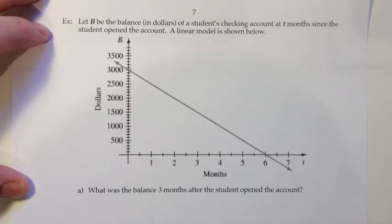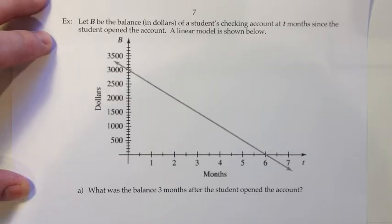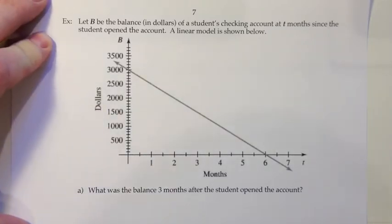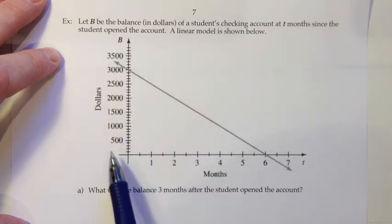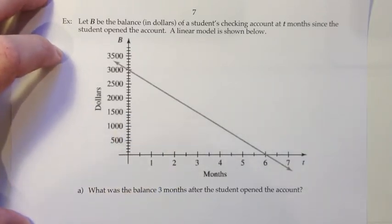Okay, we will now move on to a real-life application that uses linear modeling. Let B be the balance in dollars of a student's checking account at t months since the student opened the account. A linear model is shown below. So the line itself is what we consider to be the linear model. And then that's in the context of a set of horizontal and vertical axes. On the horizontal axis, we've got the variable t, which represents the number of months since the student opened the account. And on the vertical axis, we've got the number of dollars that's in the account. So let's look at the questions they have for us.